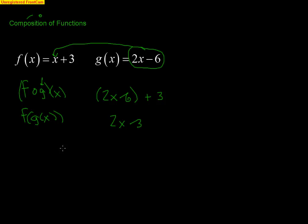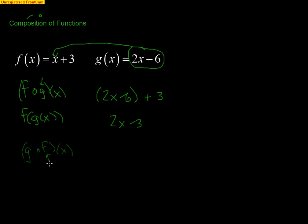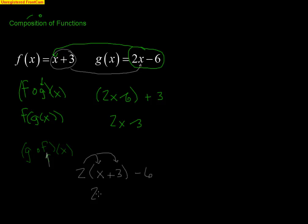We can also go the other way: g composed with f of x. That tells me f gets plugged into g. So f, which is x+3, goes into g: 2(x+3)−6. I distribute the 2 to get 2x+6, then minus 6. The 6's cancel out and we're left with 2x. That's composition — plugging one function into another.